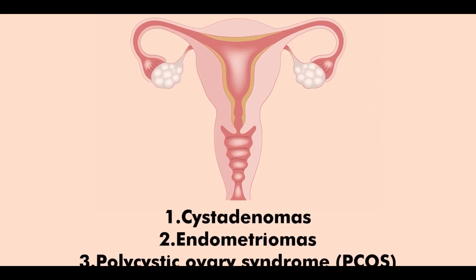The three types of pathological ovarian cysts are: number one, cystadenomas; number two, endometriomas; and number three, polycystic ovary syndrome.